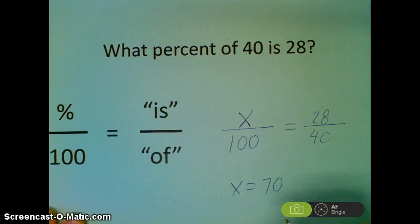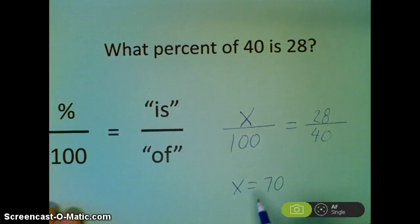I can do 28 times 100 divided by 40, and I will get x equals 70. And does that make sense? Is 28 70% of 40? Why, yes it is. I've done that correctly.